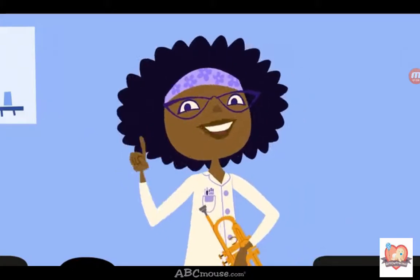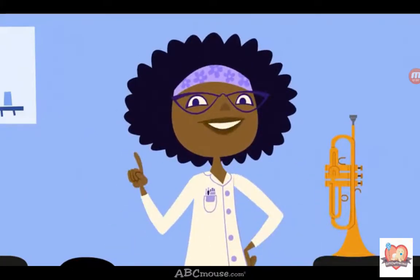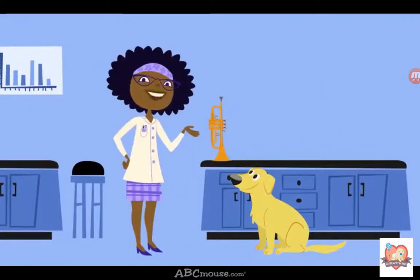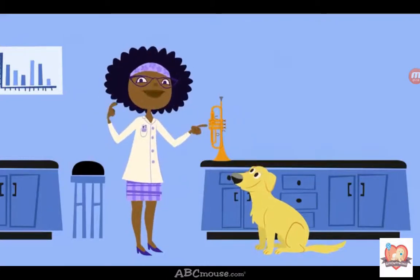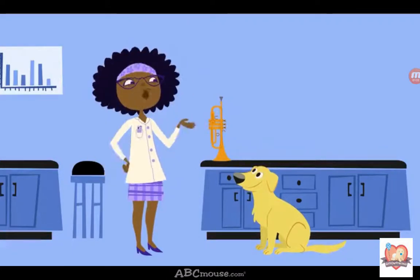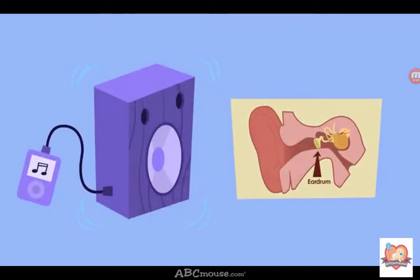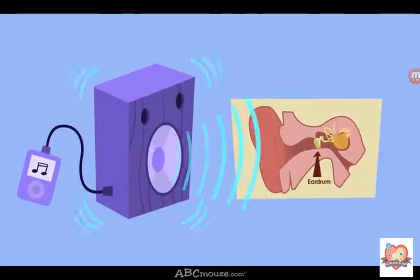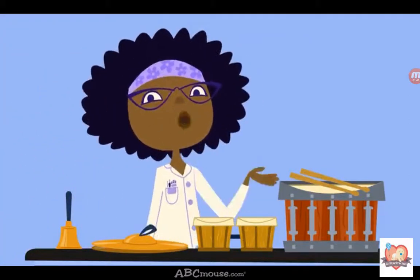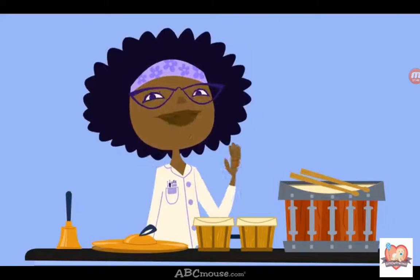Bet you didn't know that there's actually a science to music. It's all about energy — sound energy. In order to make a sound, an object has to move back and forth; we call that back and forth motion vibration. When something vibrates, it makes the air vibrate, and that vibration moves through the air from the object to our ears. The vibrating air makes the eardrum inside our ears vibrate — that's how we hear the sound. When we play a musical instrument, we're just making it vibrate in a special way to make musical notes.